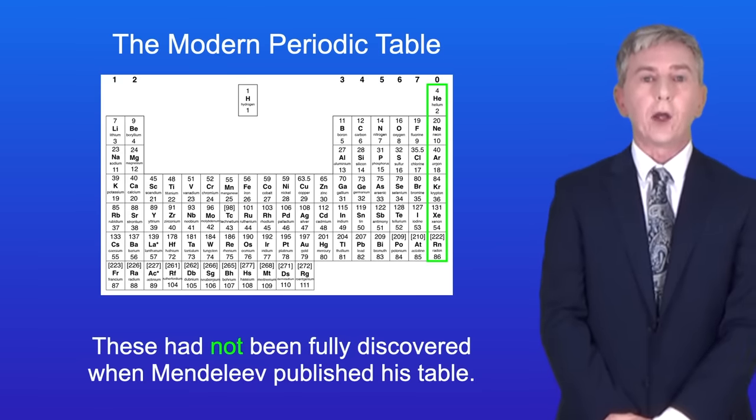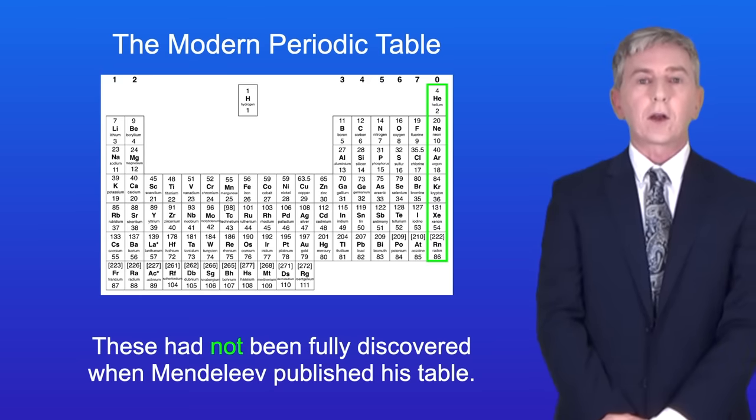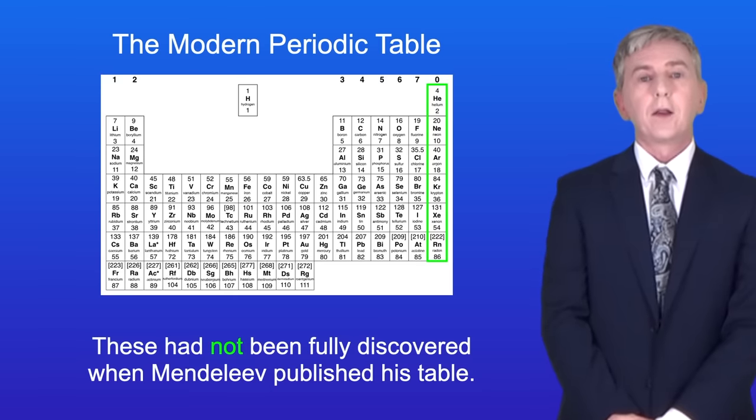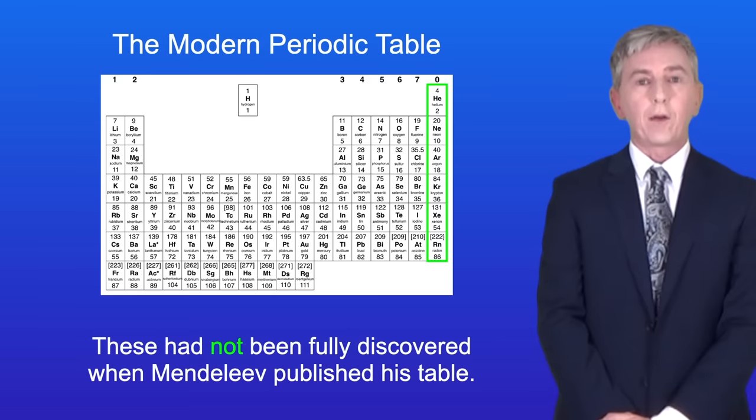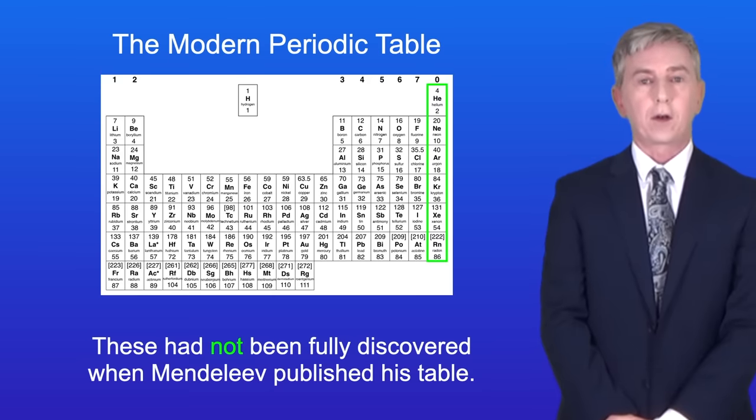So hopefully now you can describe early attempts to arrange the elements into a periodic table. You should then be able to explain why Dimitri Mendeleev's periodic table successfully predicted the properties of elements. And finally, you should be able to describe how the elements were arranged in the modern periodic table.